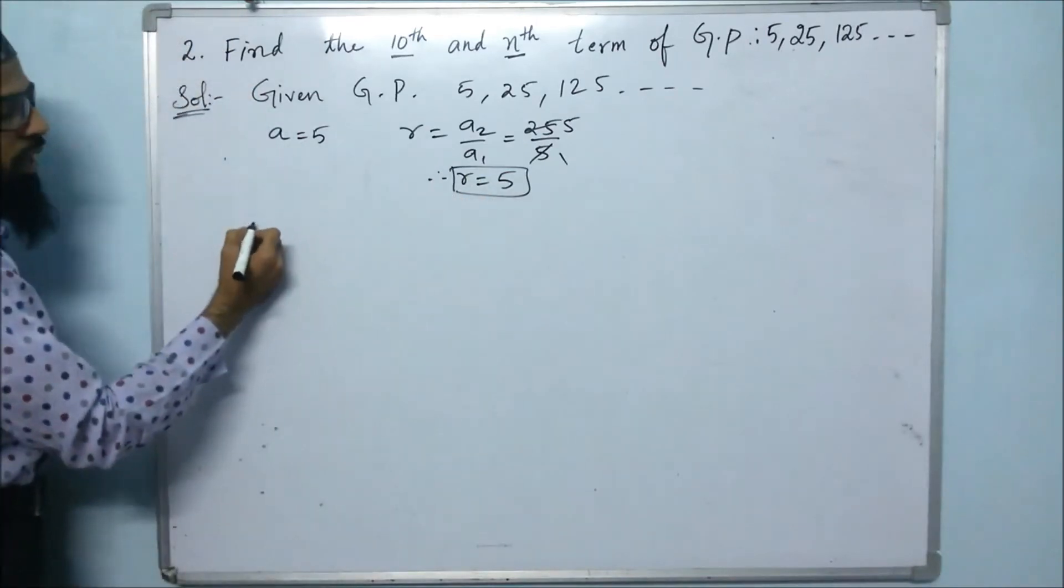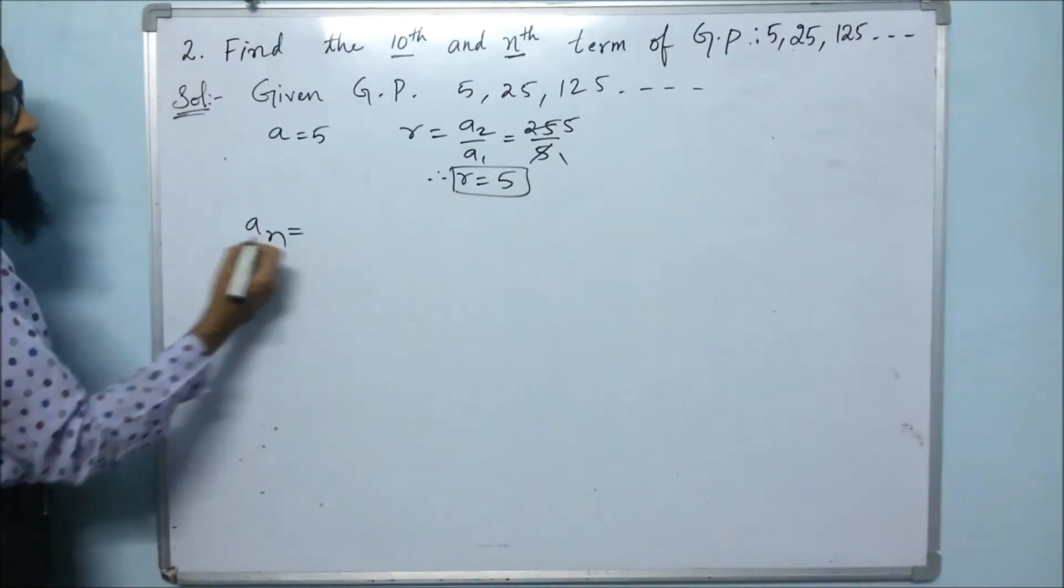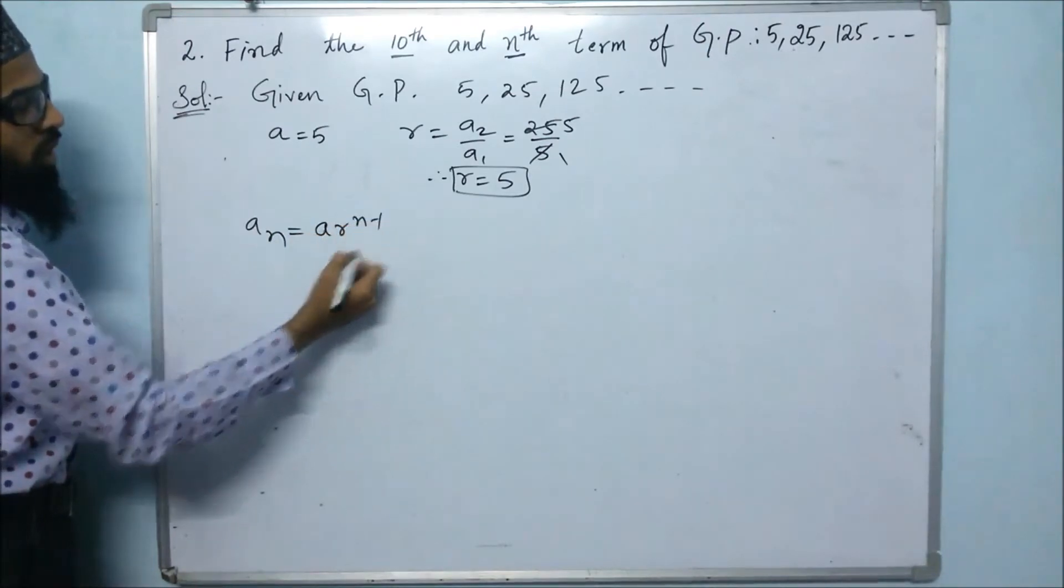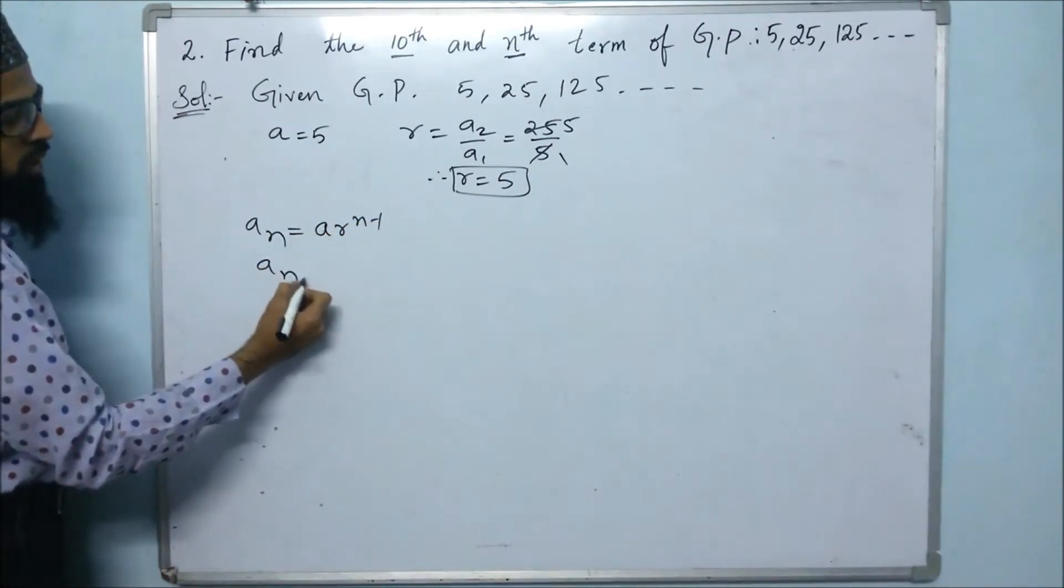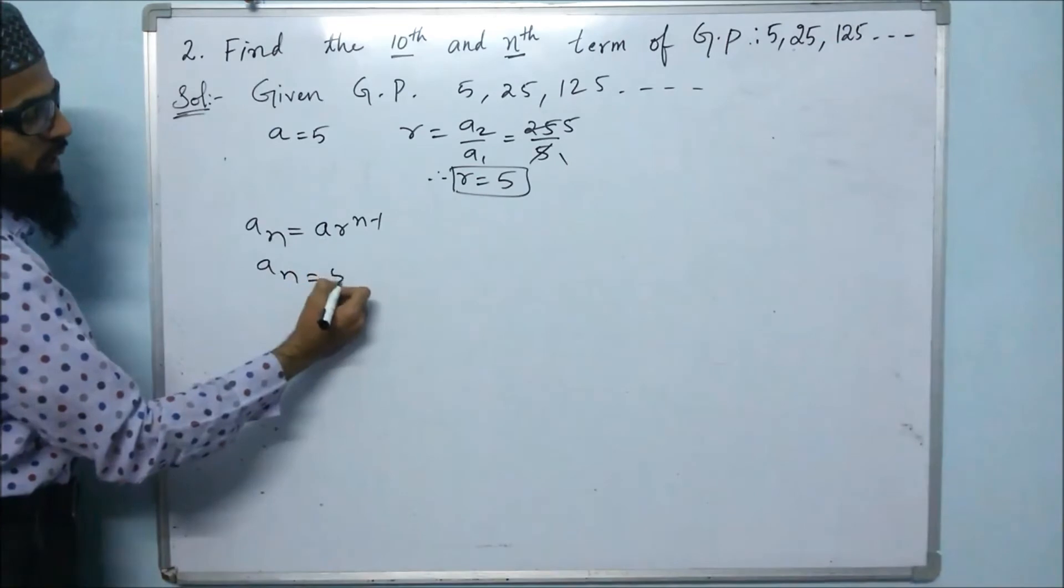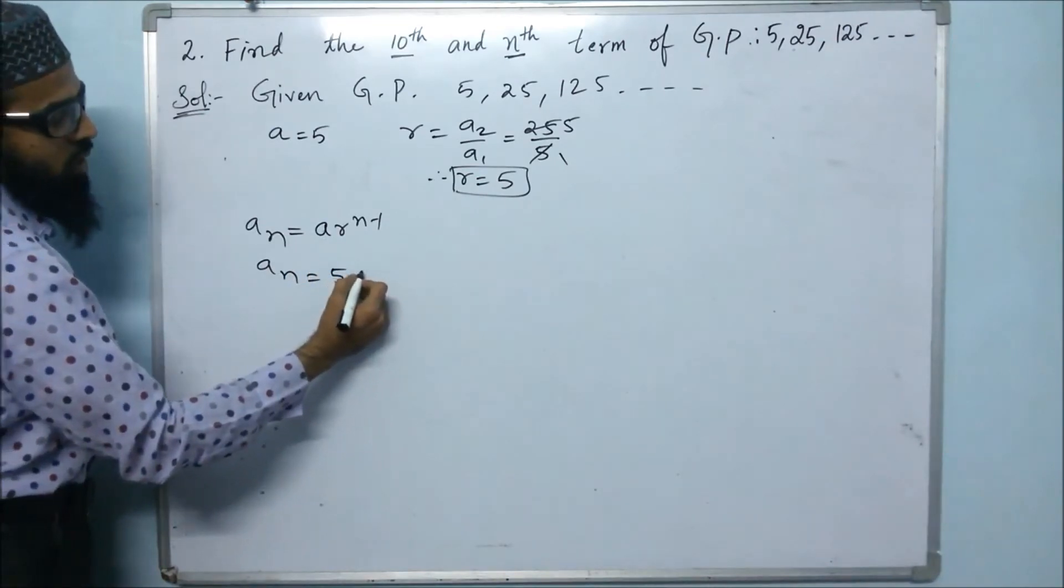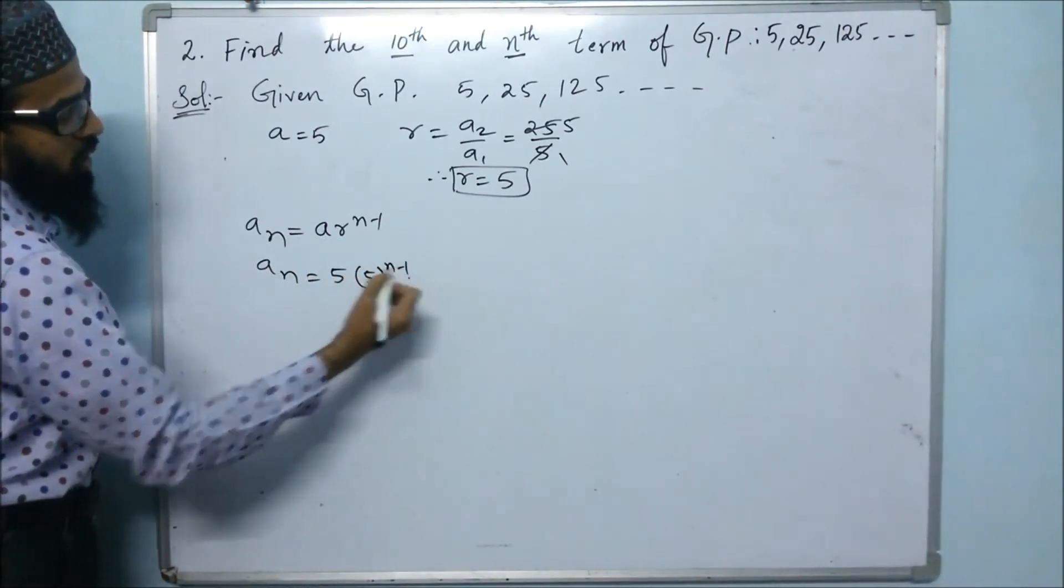Next, we will find out the nth term. an = a·r^(n-1). So an equals, what is a? a is 5. r is also 5 to the power of n minus 1.